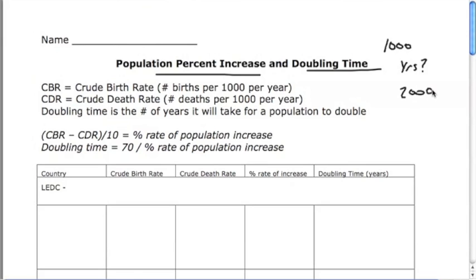A few basic terms you need to know are crude birth rate, that's the number of births per thousand women per year in that country, and crude death rate is the number of deaths per thousand people in that country per year. Doubling time is the number of years it will take for the population to double.